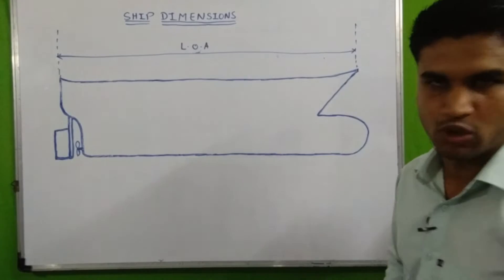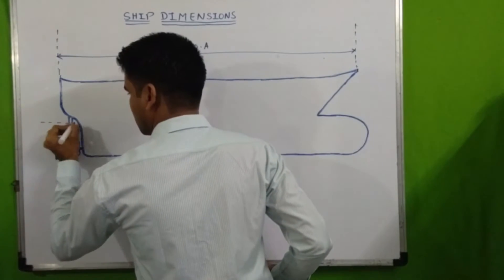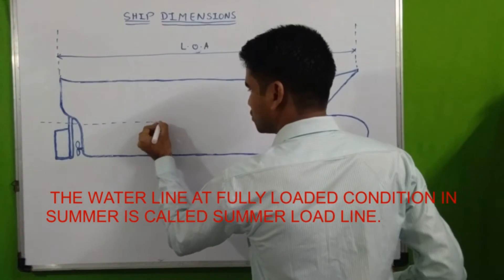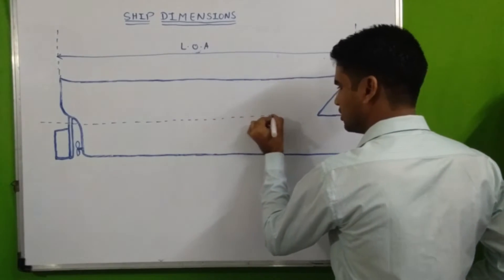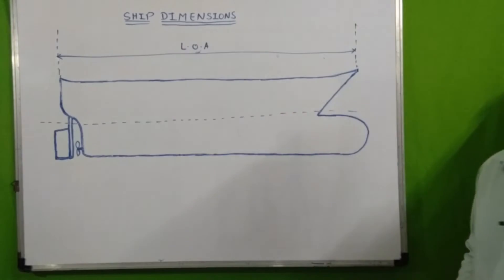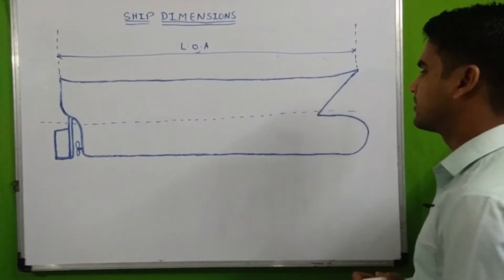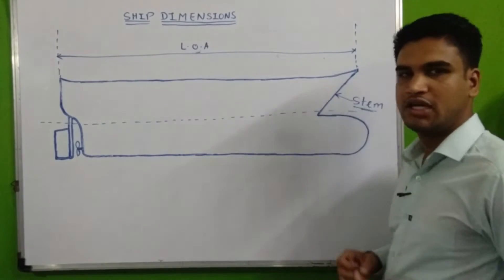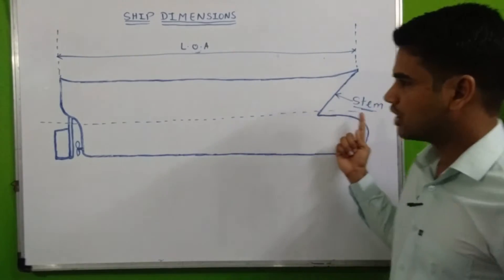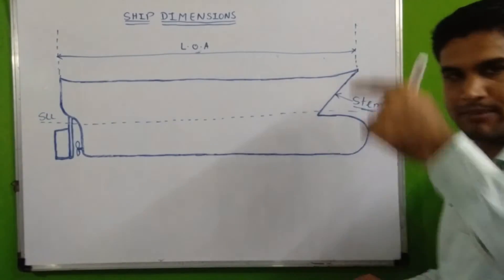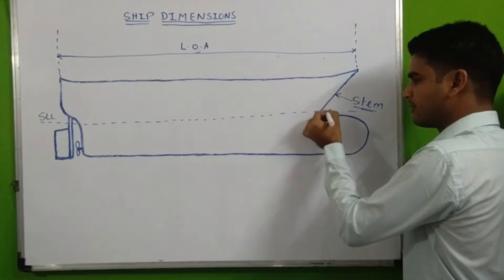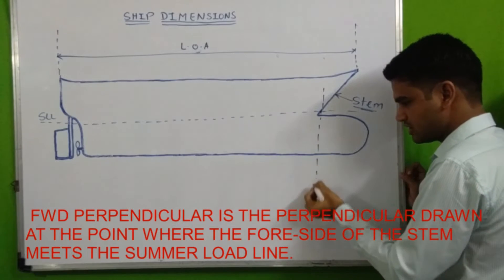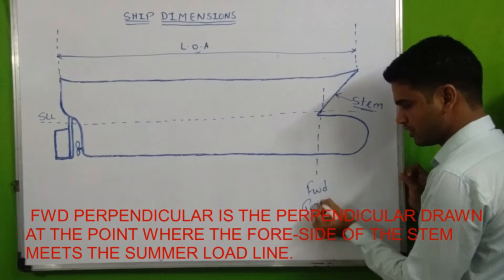Next is summer load line. Summer load line means the water line at fully loaded condition in summer. Similarly, we have winter load line, which is the water line at fully loaded condition in winter. With respect to summer load line, we have forward perpendicular and aft perpendicular. Forward perpendicular is drawn perpendicular to the point where the foreside of a stem meets the summer load line.